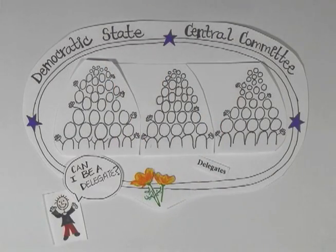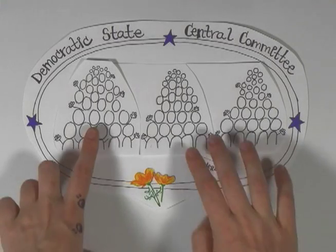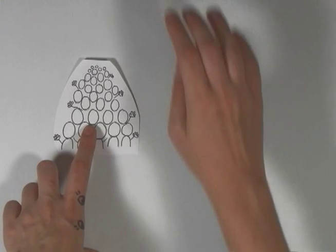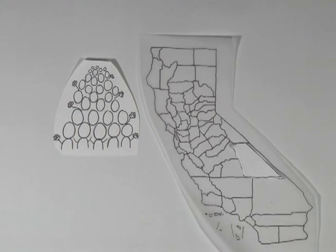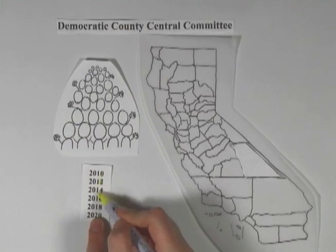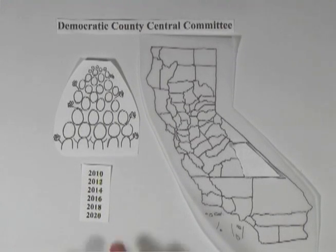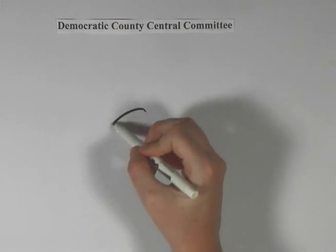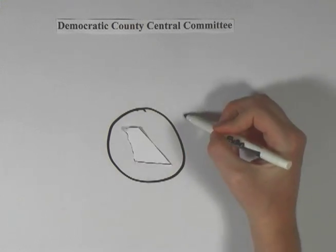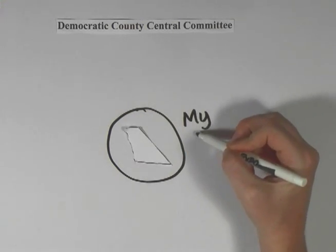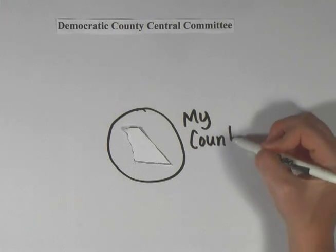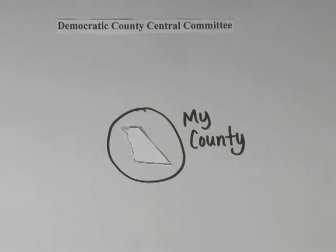There are three basic ways for someone to become a state party delegate. First, each of the 58 counties in California can have a body known as the Democratic County Central Committee. The members of these committees are elected on the Democratic primary ballot in even-numbered years, or are subsequently appointed by elected members to fill any vacancies. These committees are the Democratic Party of their county and are established and governed by California election law.